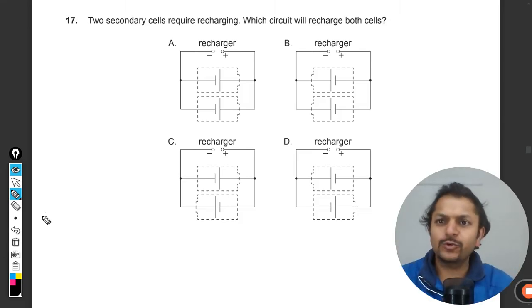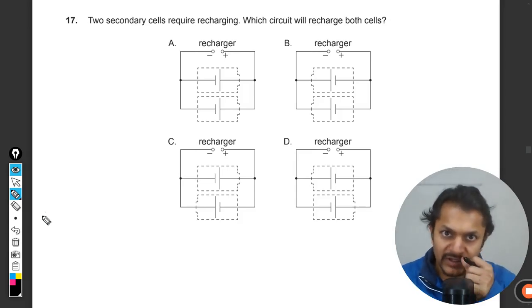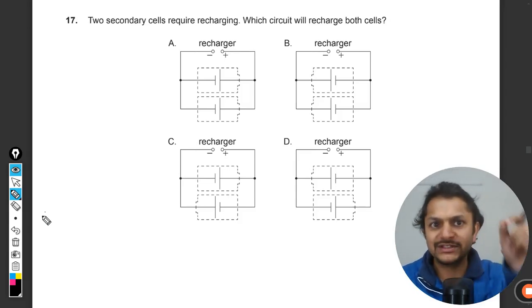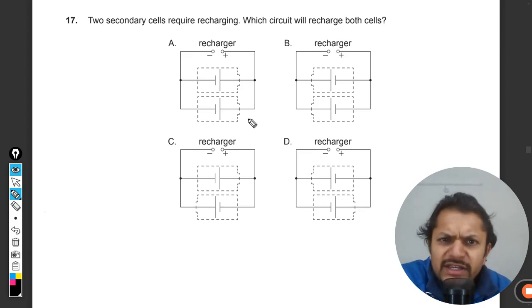Okay, let us see what is there in this question. Two secondary cells require recharging. Which circuit will recharge both cells? So this seems to be an easy question. See, discharging of a cell means that the current will be like this.